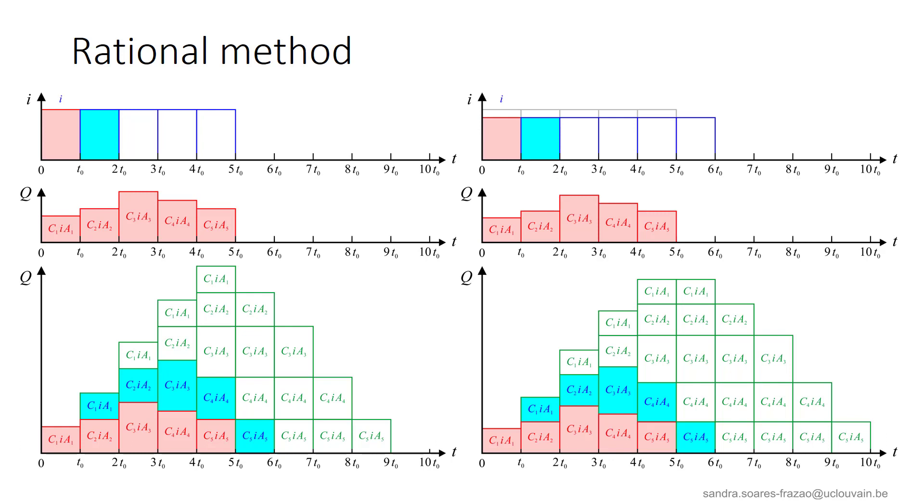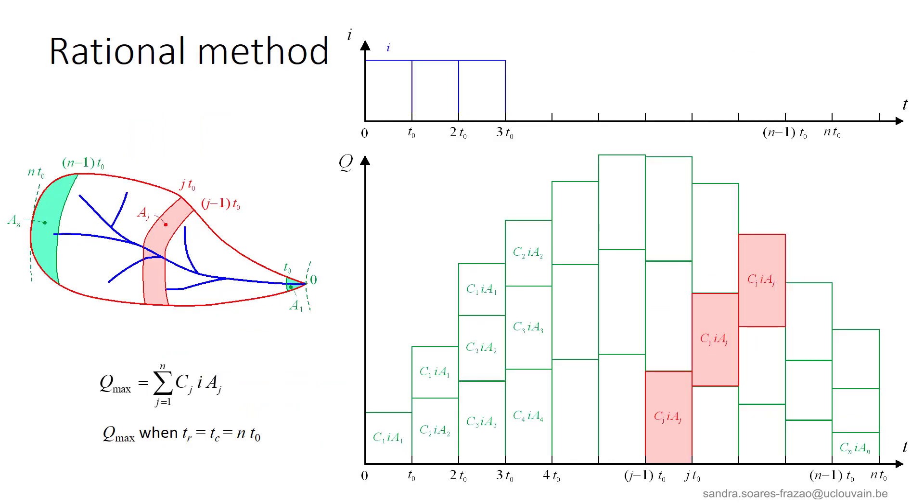So, we can conclude that the maximum discharge is obtained when the rain duration TR is equal to the time of concentration TC. For shorter rain durations, not all the catchment will contribute, and for longer duration, the rain intensity decreases. This can be generalized to any number of subcatchments. In this example, with n subcatchments and the total time of concentration equal to n times T0, the maximum discharge is still obtained when the rain duration TR is equal to TC.